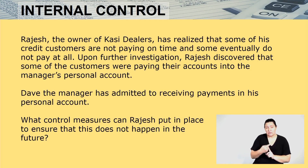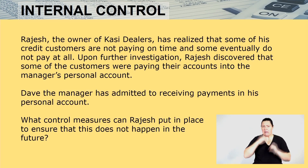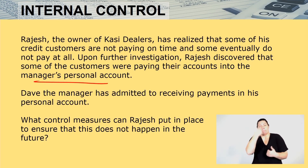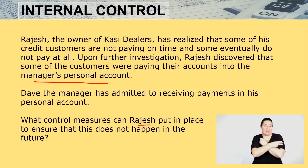Lastly, let's talk about internal controls. Rajesh, the owner of Currency Dealers, has realized some credit customers are not paying on time, and some eventually don't pay at all. The manager Dave was found to be collecting payments into his personal account. Internal control measures Rajesh can put in place include: ensuring all cash takings are banked daily, ensuring all transactions are recorded, and ensuring there are source documents supporting every transaction. We'll go for a quick break — thank you all, take care.